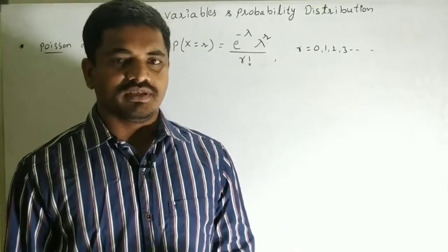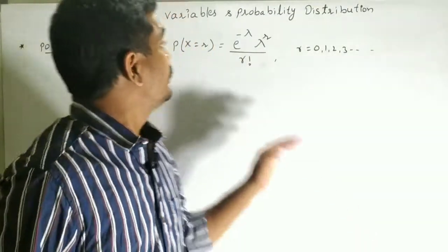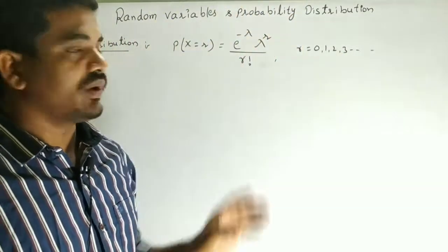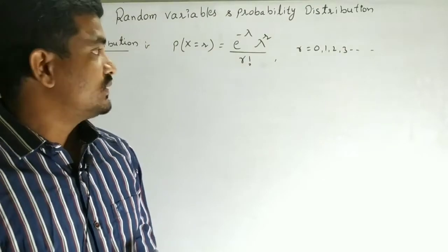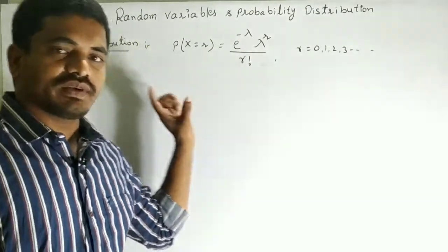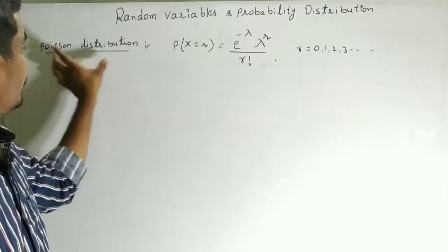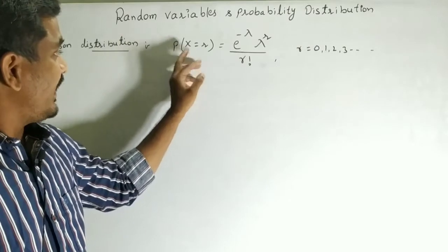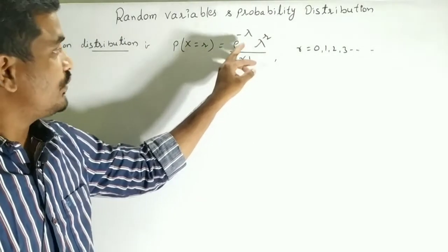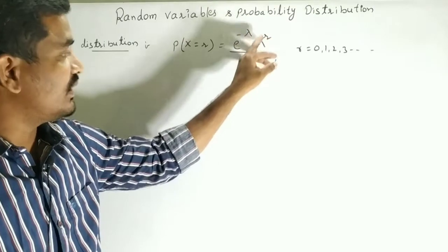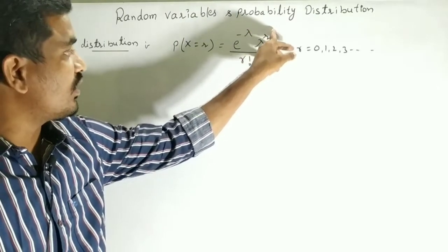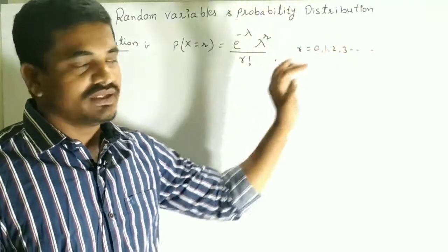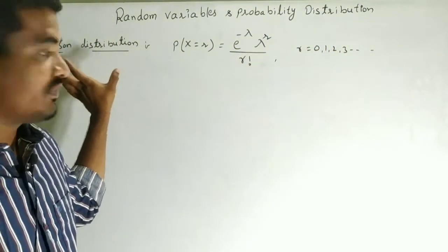Hi friends, welcome to my channel. Here we cover random variables and probability distribution. Today we discuss the Poisson distribution. The formula is: P(X = r) = e^(−λ) × λ^r / r!, where r = 0, 1, 2, 3, 4, and so on. This is the formula of the Poisson distribution.